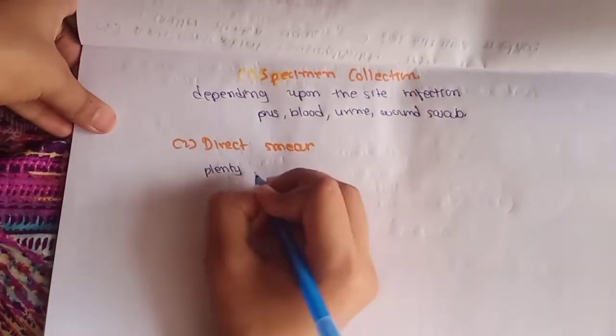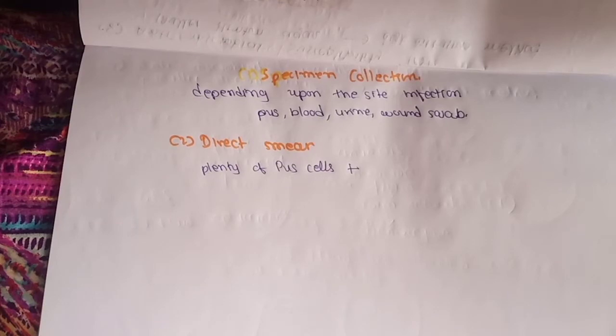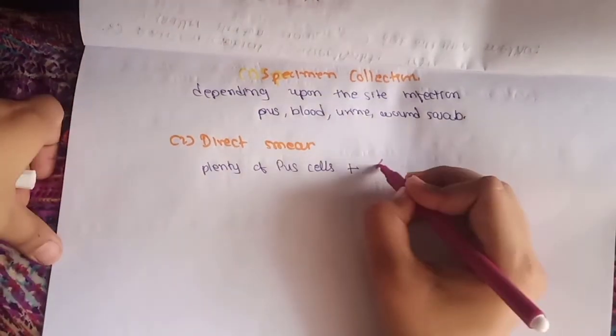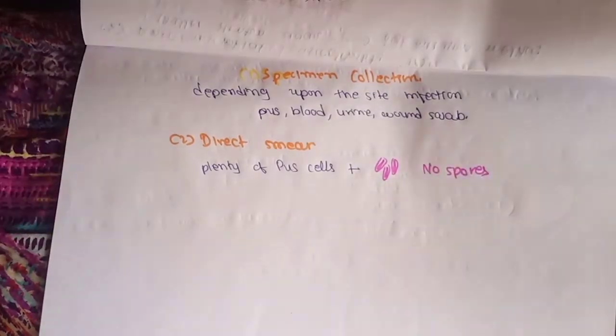The second method is direct smear microscopy. We will see plenty of pus cells and gram-negative capsulated Pseudomonas with no spores. Third method is culture.